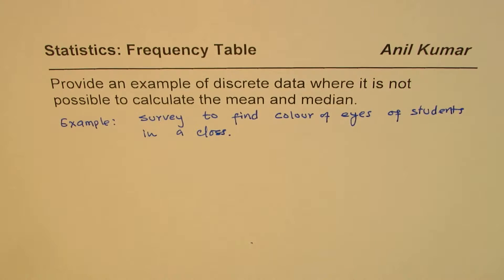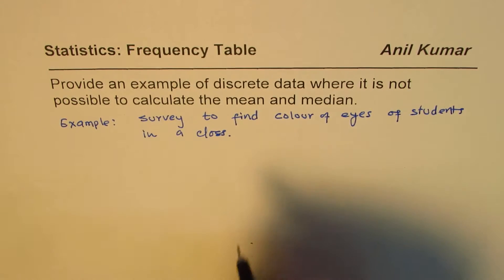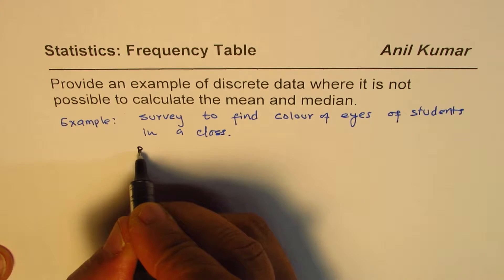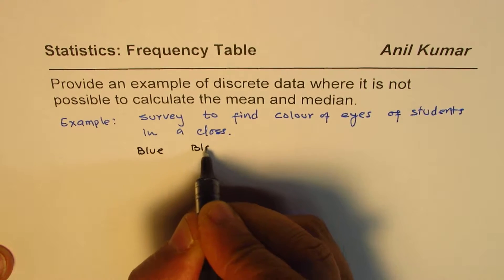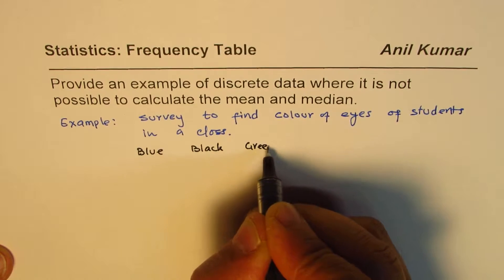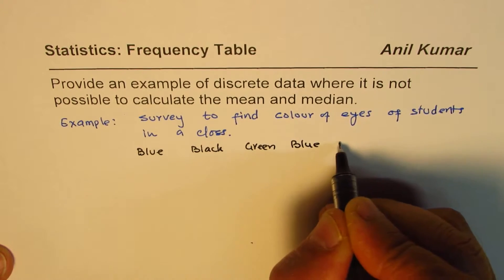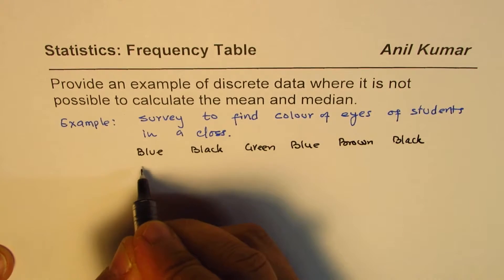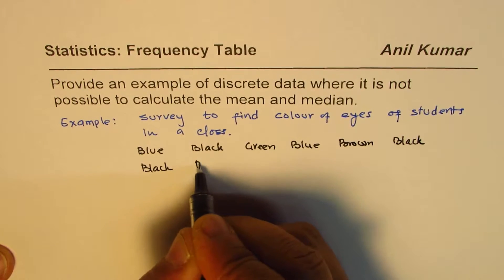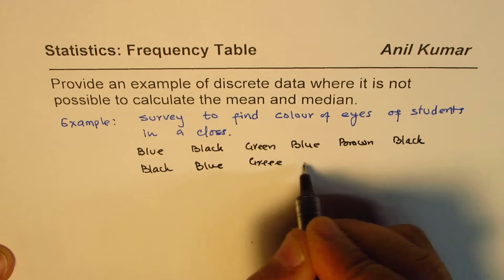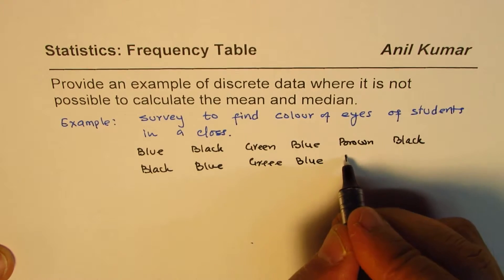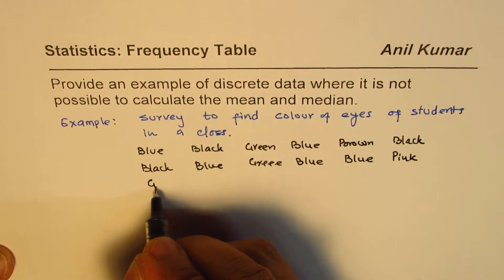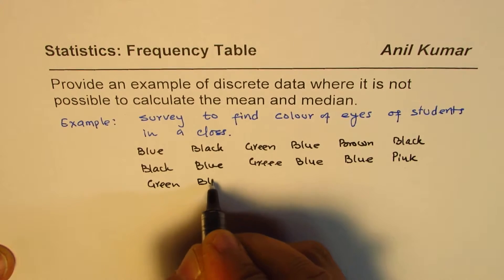So let me take an example where we will do a survey to find or tabulate colour of eyes. In that case, we will collect the data which will represent the colour of the eye. So it could be blue, black, green, blue, brown, black, black, blue, green, blue, blue, pink, green, blue.